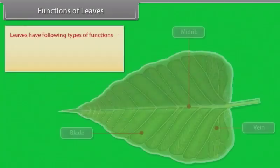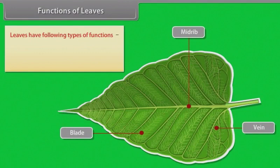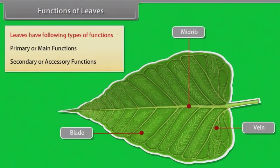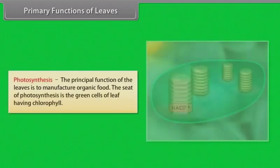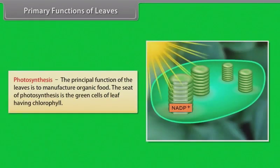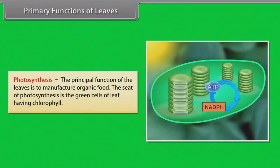Functions of leaves. Leaves have following types of functions: primary or main functions and secondary or accessory functions. Primary functions of leaves. Photosynthesis: the principal function of the leaves is to manufacture organic food. The seat of photosynthesis is the green cells of leaves having chlorophyll.